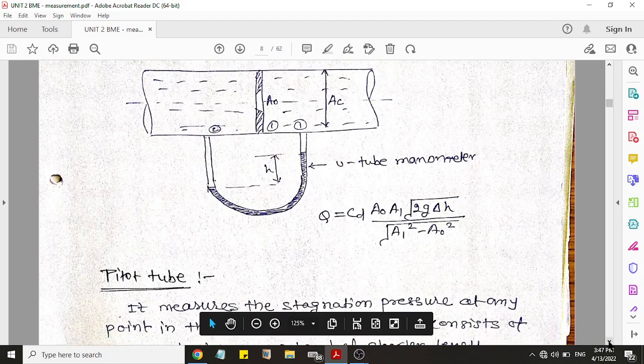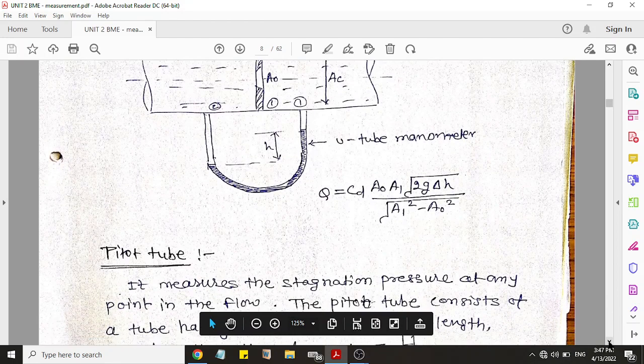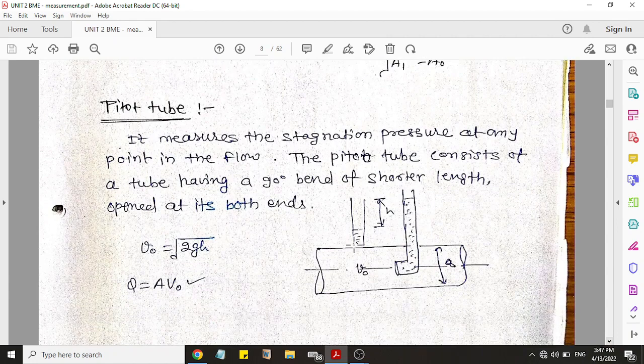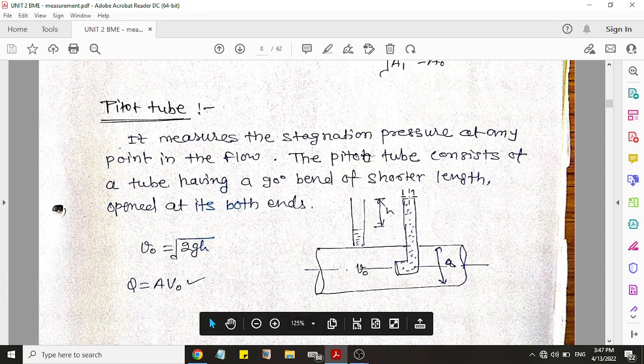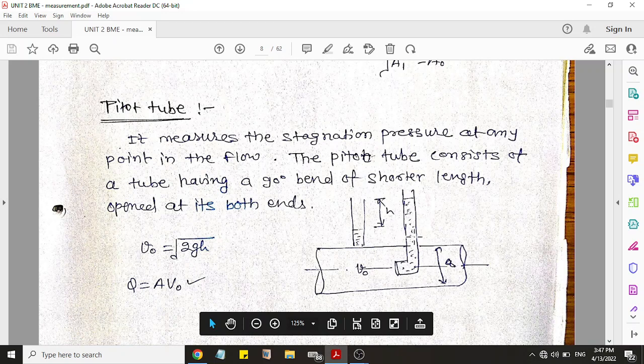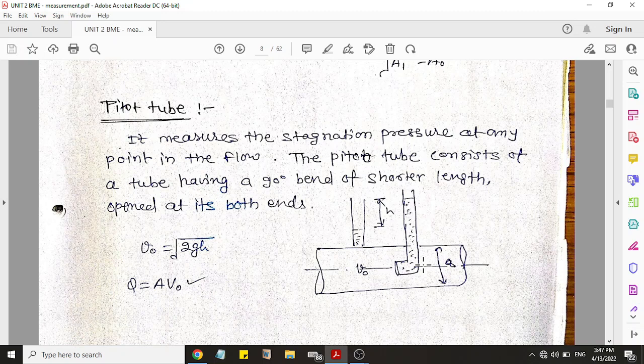And third method is pitot tube. Pitot tube is basically a simple L-shaped glass tube to measure basically the river type where the flow is open, like in a river or pond.